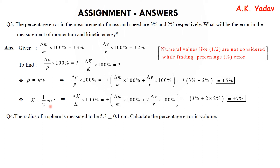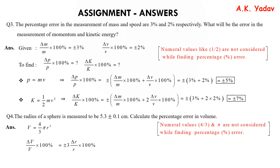Question 4: The radius is given and we need to find the percentage error in volume. The formula for volume is V = (4/3)πR³. The constant 4/3 and π are not considered in percentage error calculation. Only the R³ (power) term remains. So delta V / V × 100% = ±3 × delta R / R × 100%. With delta R = 0.1 and R = 5.3, on solving we get ±5.6%.